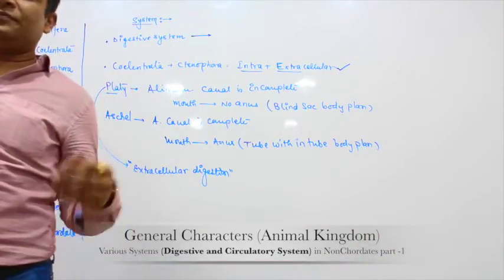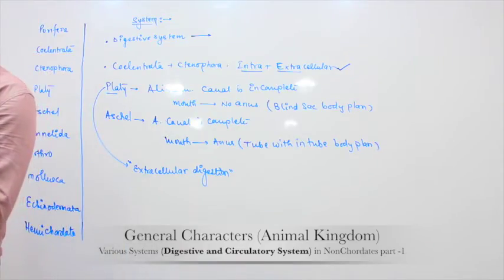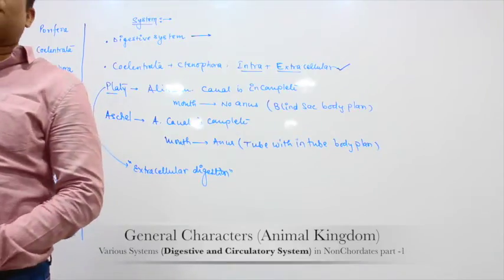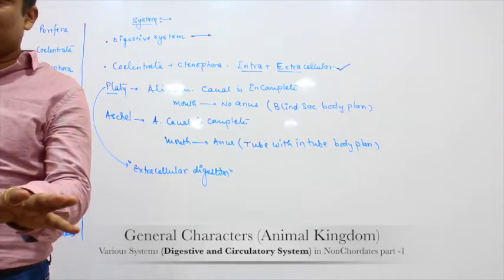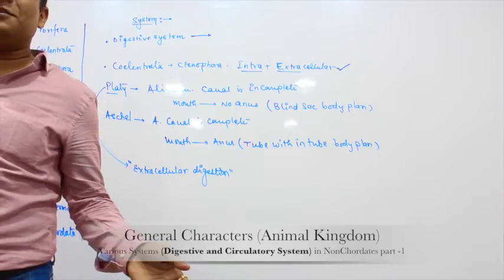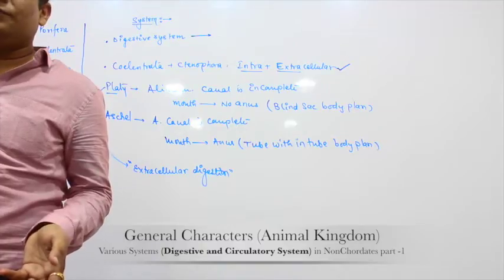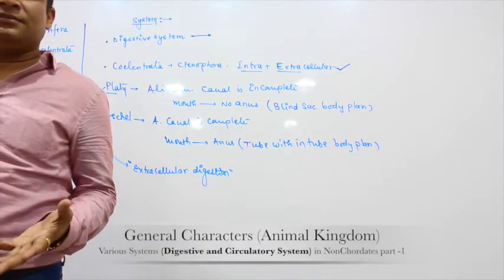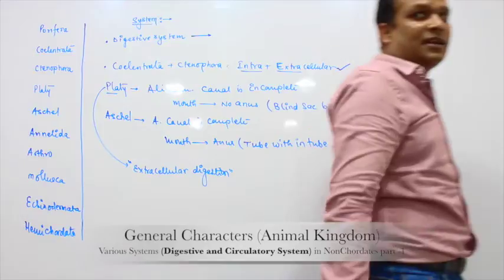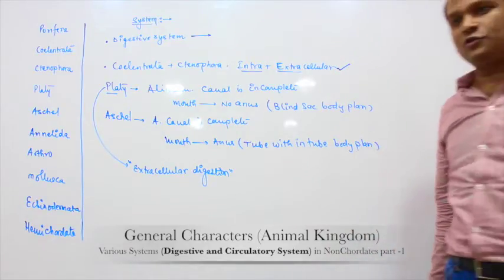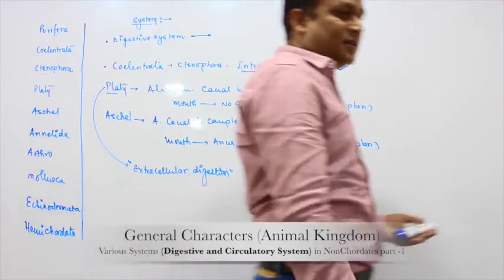In higher organisms, the type of digestion is extracellular. But bacteria and fungi also do extracellular digestion — they are very low organisms. Bacteria and fungi which act as decomposers, detritivores, or saprophytes — read chapter 2 — saprophytes, detritivores, or decomposers do extracellular digestion.